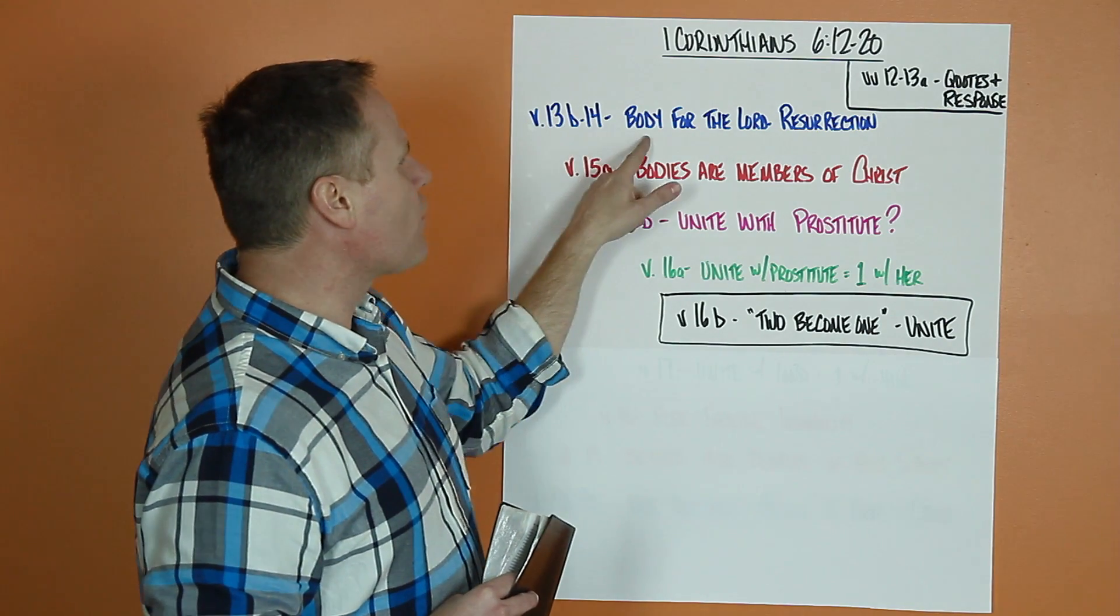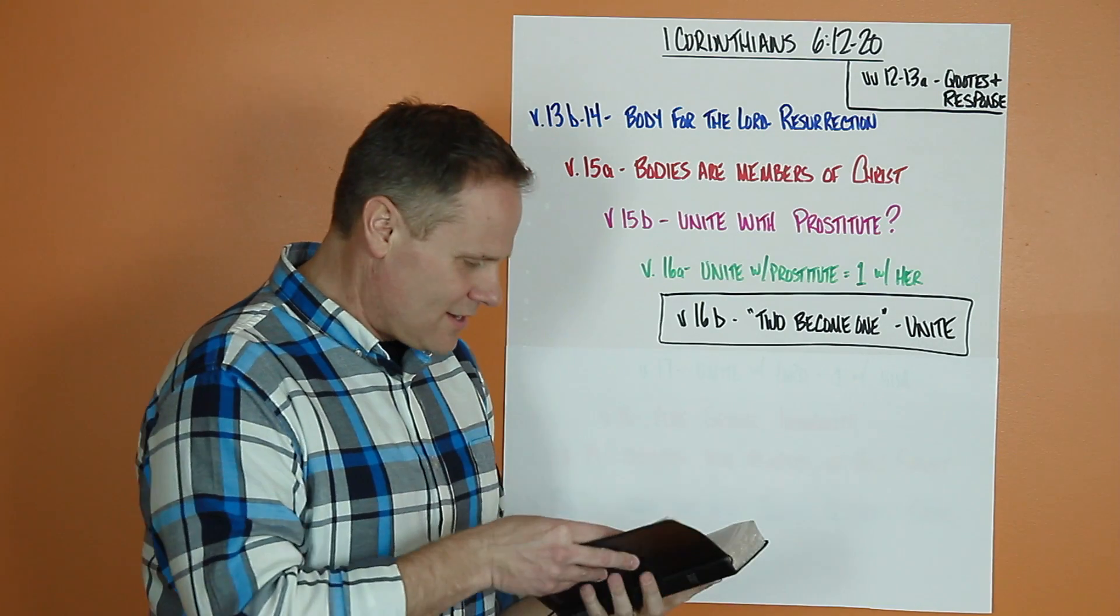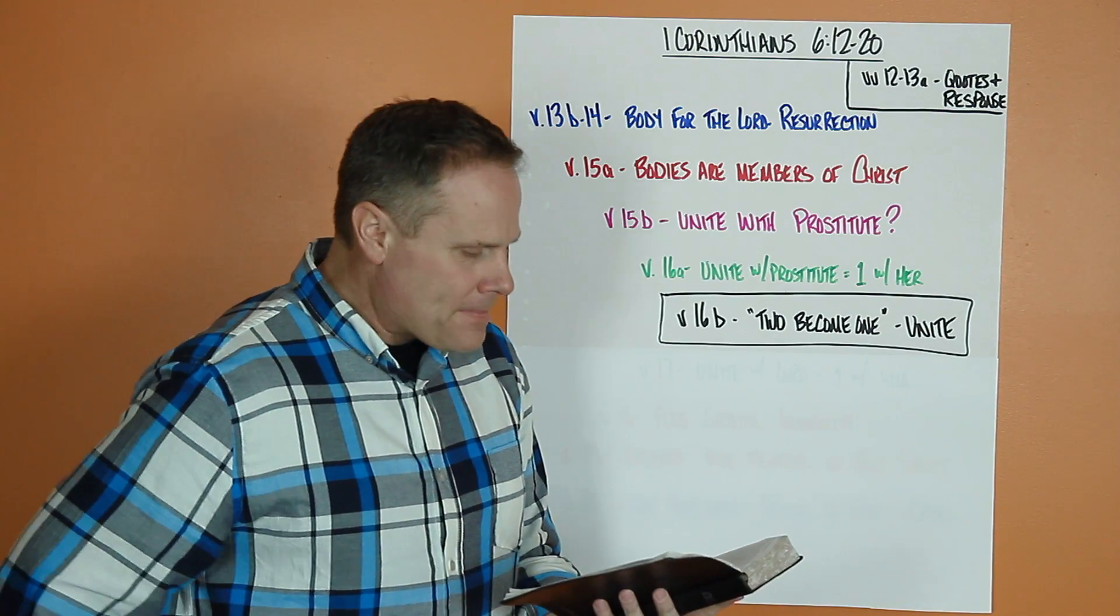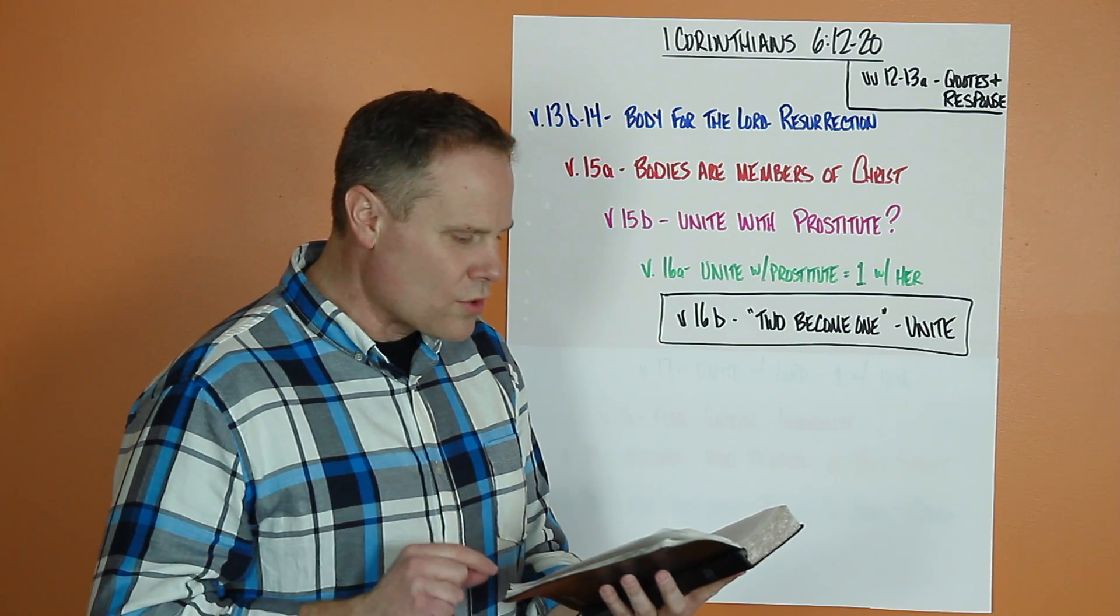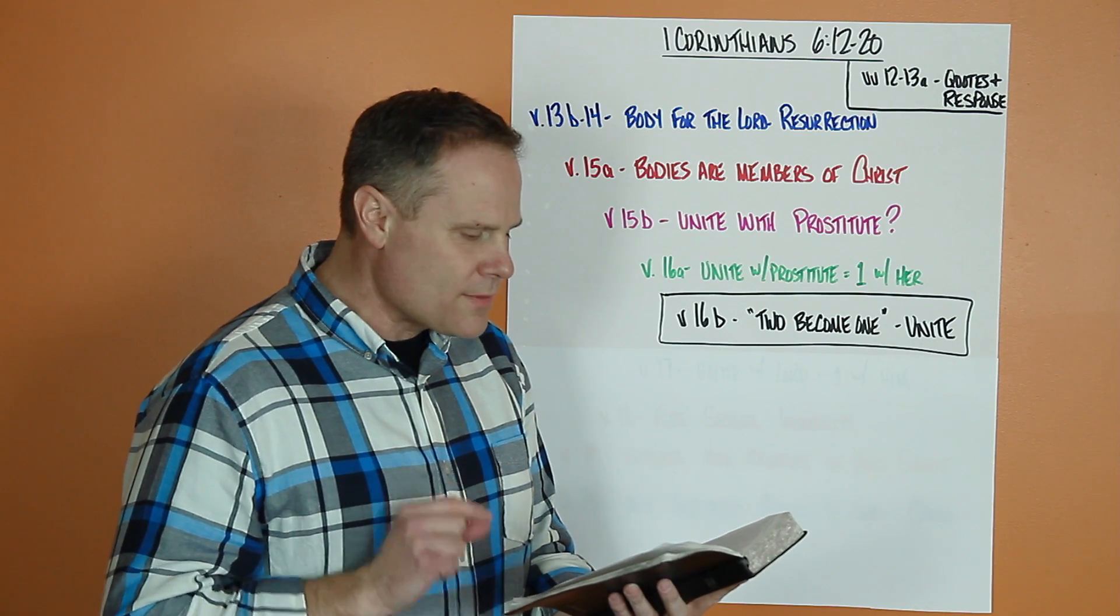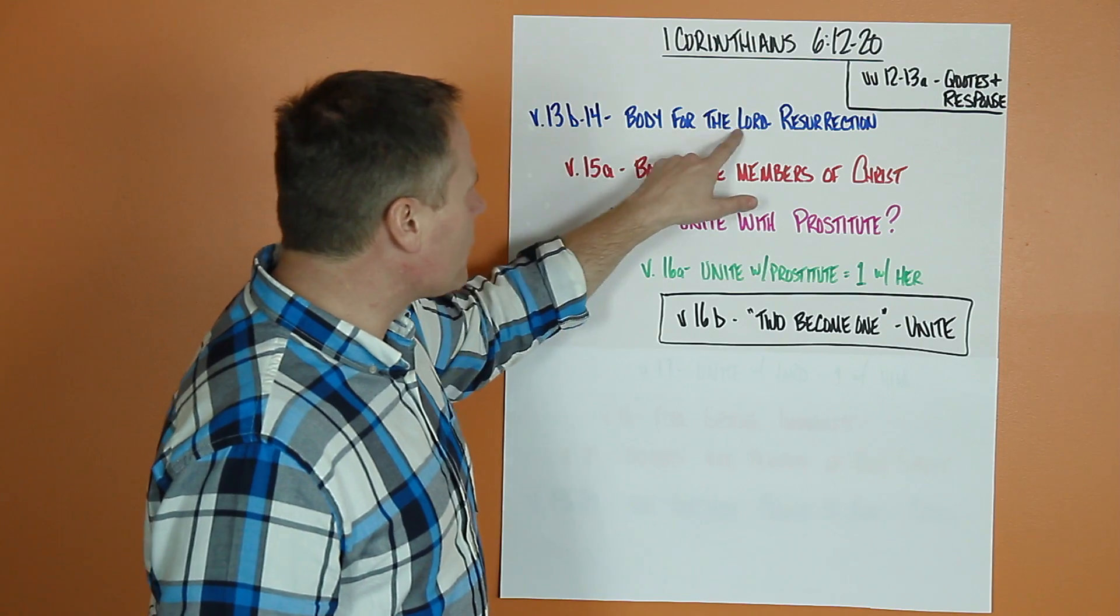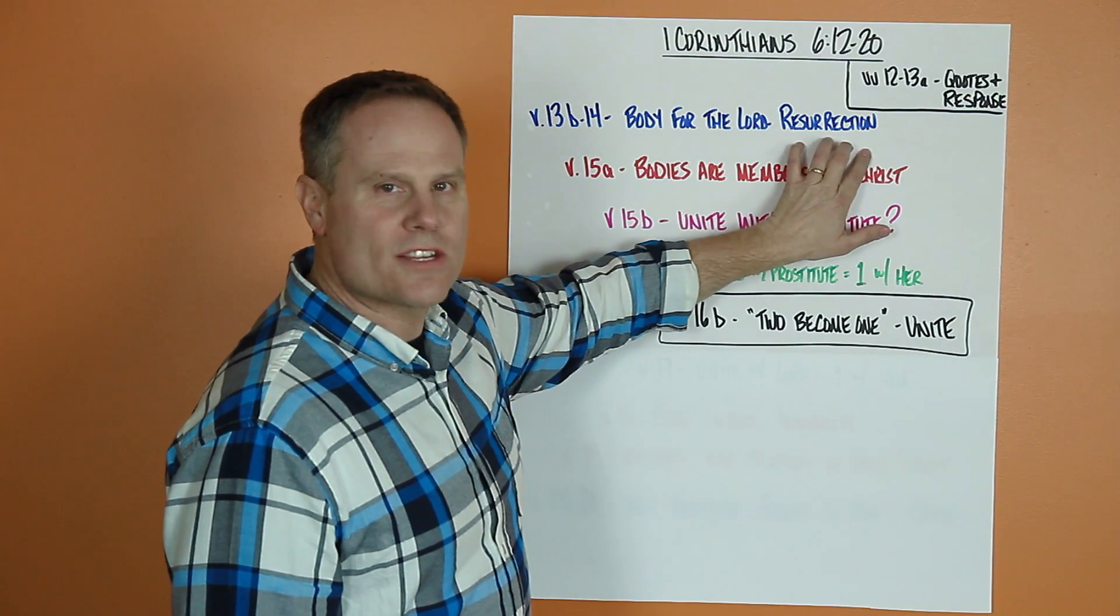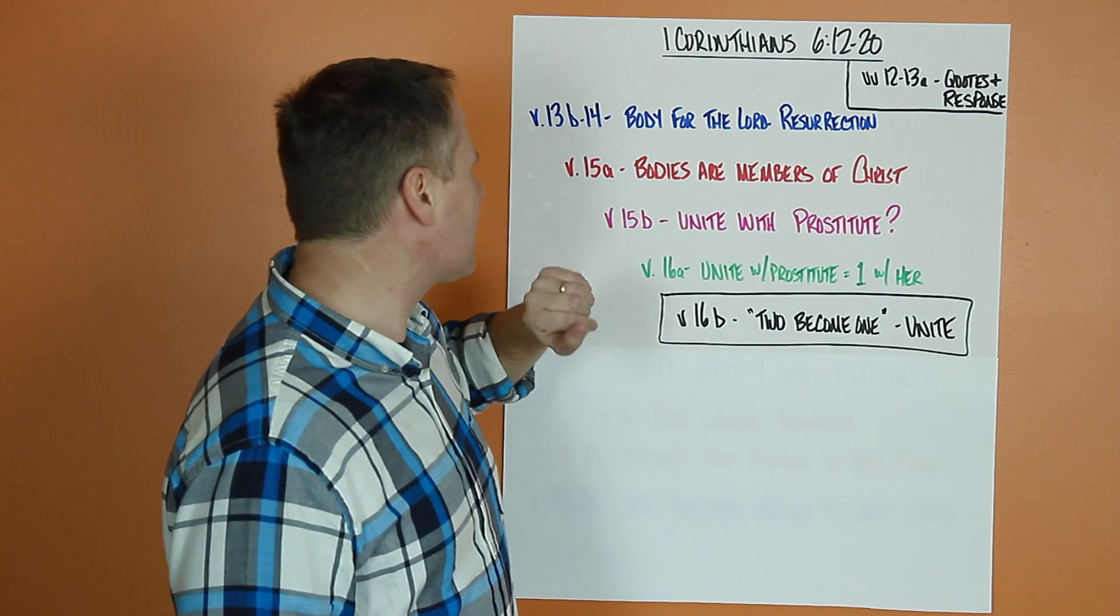The second half of verse 13 through 14 is how the body is for the Lord, and notice he uses resurrection. So middle of verse 13, the body is not meant for sexual immorality, but for the Lord and the Lord for the body. By his power, God raised the Lord from the dead. He will raise us also. Bodies made for the Lord, the Lord for the body, and he uses the resurrection to prove it, that our body is not just a temporary throwaway piece.